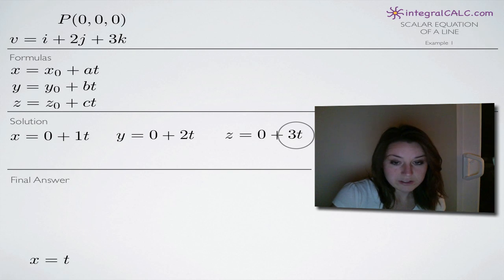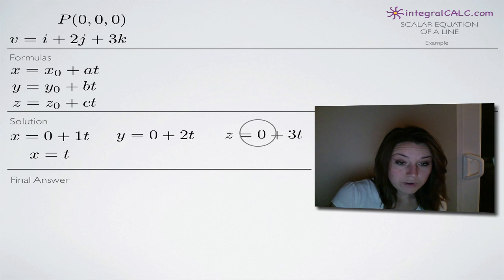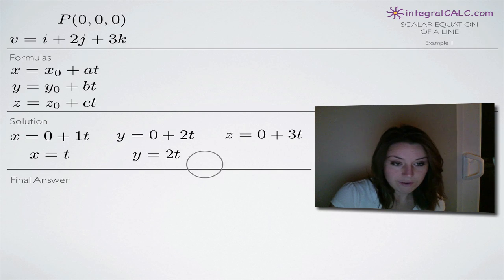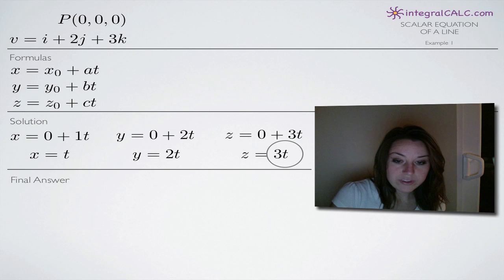So we end up with these three equations here as the scalar equations of this particular line. All we have left to do is simplify and when we do that, we're going to get x equals t because the zero obviously goes away and the one is redundant.